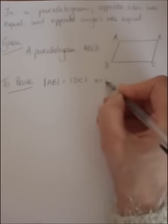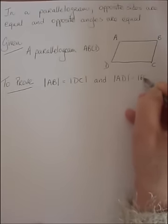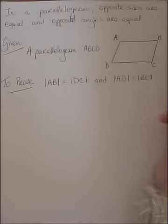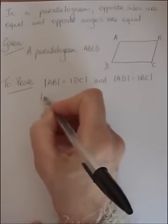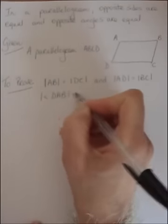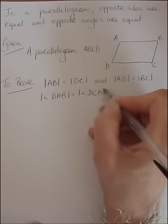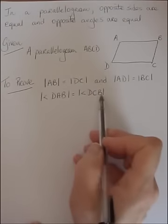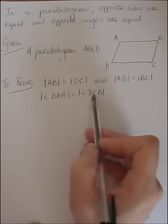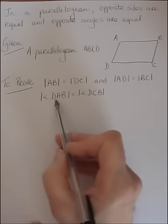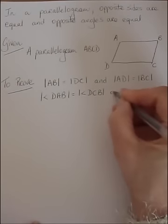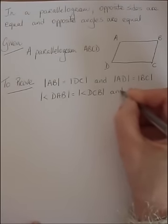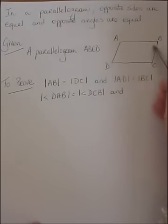We also want to show that the opposite angles are equal in measure. Note that the opposite angles both start and stop with the same letters — D and B — so that's a little check that you're writing them correctly. And the other pair of opposite angles start with A and C.